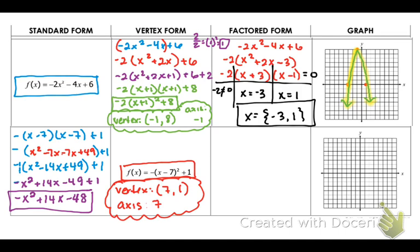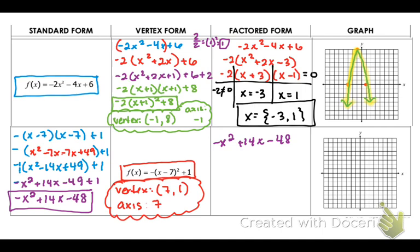Now that I have my standard form, I'm going to do factored form. I can't go directly from vertex to factored — I have to go through standard first, which is what we did. So using negative x squared plus 14x minus 48, my a is negative 1, which is less than 1, so I need to factor out the GCF of negative 1. You are not allowed to have a negative leading coefficient inside the parentheses, so I factor out negative 1, leaving x squared minus 14x plus 48.